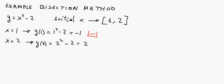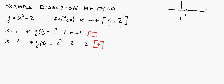What's important here is the sign, more than the actual value. So this value at x equals 1 is negative, and at x equals 2, the function is positive. That means that between this point and that point, the line has to cross the x-axis at the point where the root is.